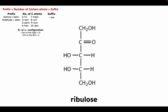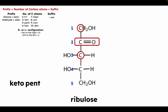For example, let's name ribulose. The carbonyl group is attached to two carbon atoms, so this is a keto because this is a ketone. Then we count the number of carbon atoms: one, two, three, four, five. Five is 'pent,' so we write pent and add the suffix '-ose' — giving us ketopentose. Now for D or L configuration: the chiral carbons are carbon three and carbon four. Number four is higher, so we check the hydroxyl group on carbon four. The hydroxyl group is on the left side, so this is an L sugar.